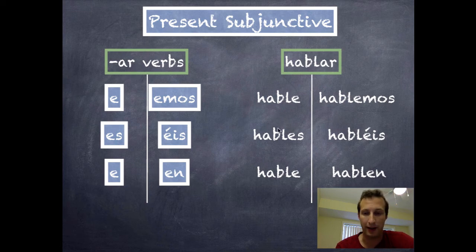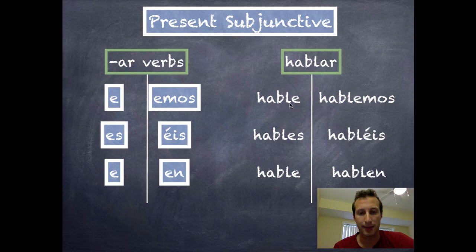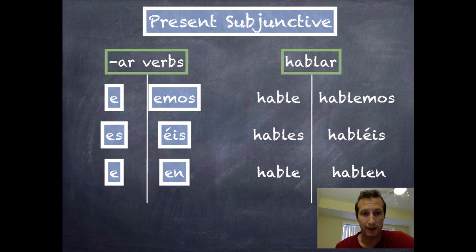If I wanted to say, my brother wants me to speak Spanish, I could say, MI HERMANO QUIERE QUE YO HABLE ESPAÑOL. That's a little example of the AR verbs in the present subjunctive.